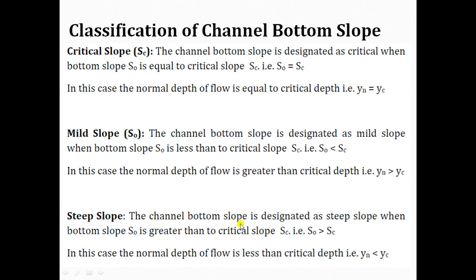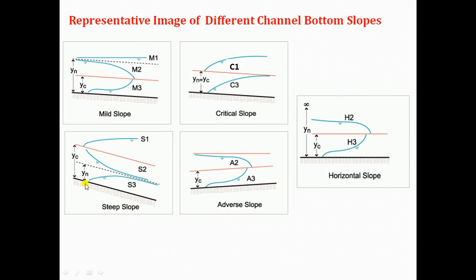Steep slope: the channel bottom slope is designated as steep slope when S0 is greater than the critical slope SC. In this case, the normal depth of flow Yn is less than the critical depth Yc. Since the channel has more slope, velocity of flow is very high. By continuity equation, the area of flow section will be less, and for a rectangular channel with constant bed width, the depth of flow if uniform will be less. Hence Yn is less than Yc.